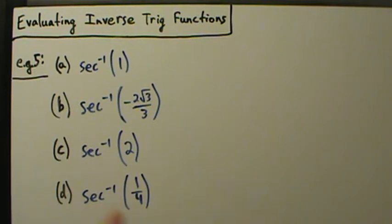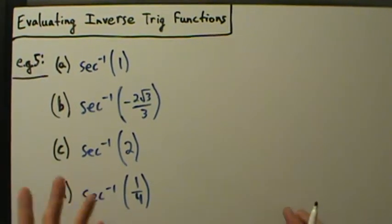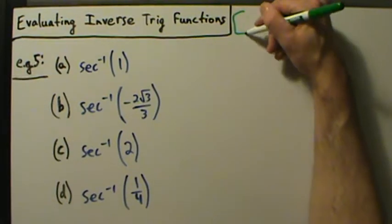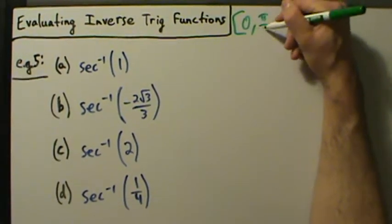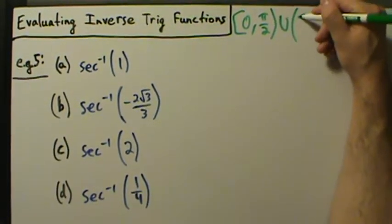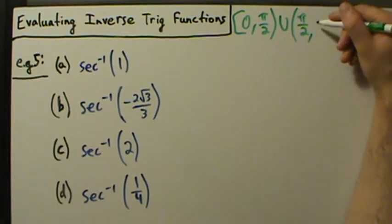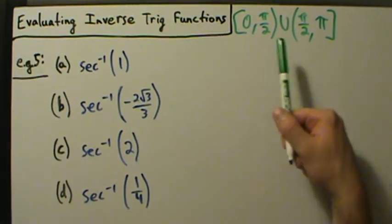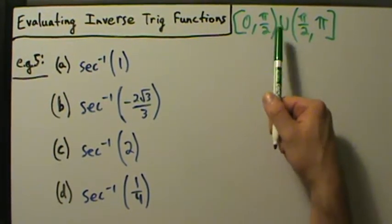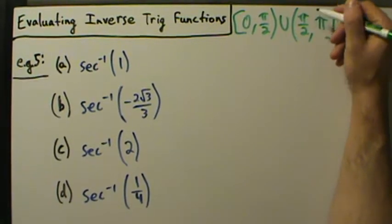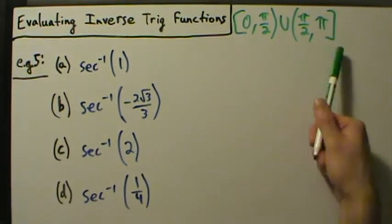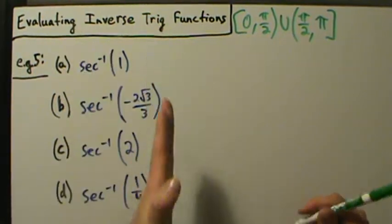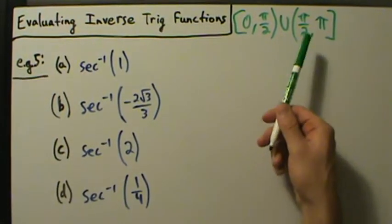Before we move on, just like in the first four examples, we want to remember what's the range of the inverse secant function so that we can be sure we get a correct number. The range, the way we defined it, is 0 to π/2, union π/2 all the way up to π — basically everything between 0 and π, including 0 and π, except for π/2. Whatever numbers we get when we evaluate must be inside this range or something went wrong.